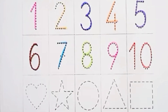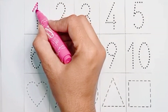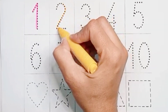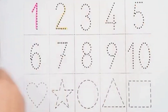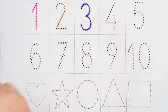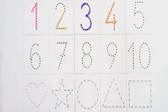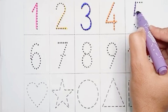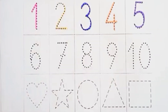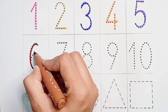Pink color number one, yellow color number two, blue color number three, orange color number four, purple color number five, brown color number six.